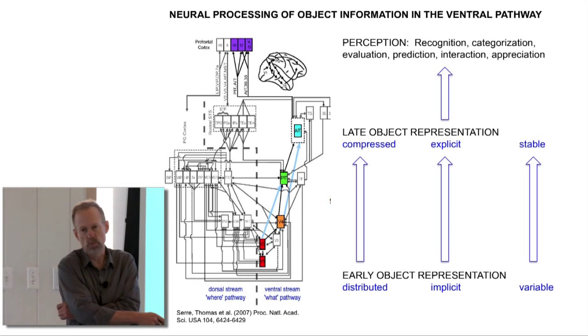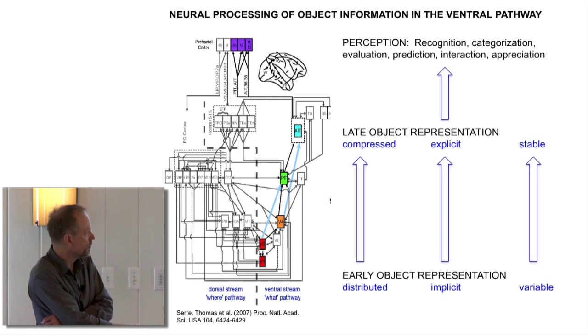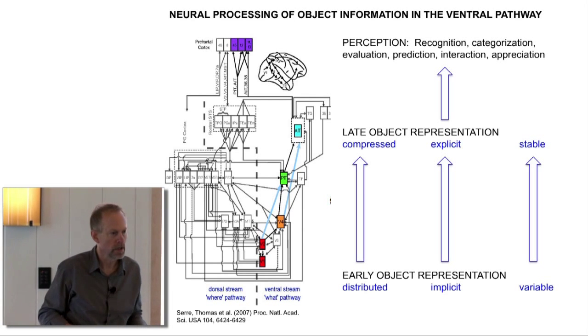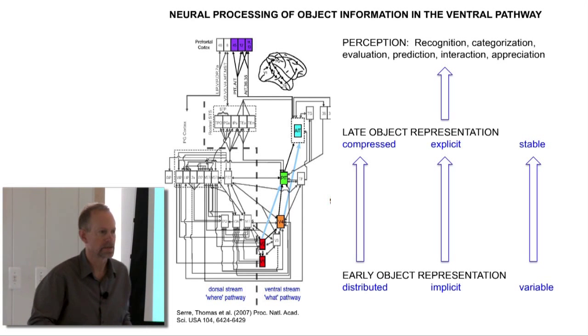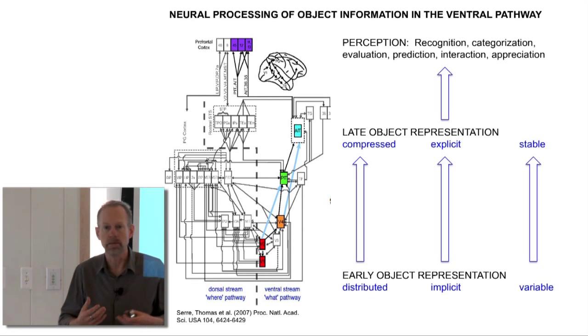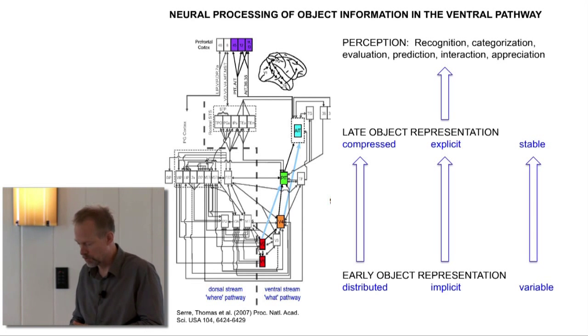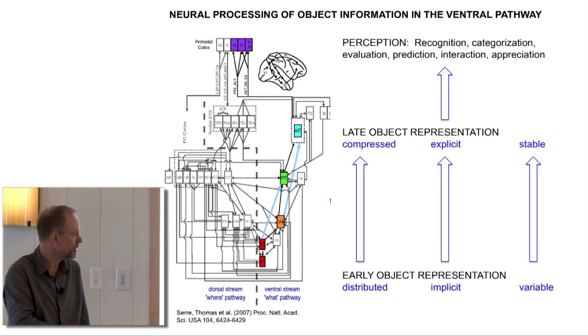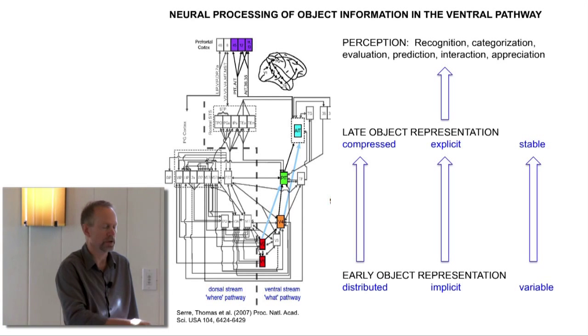These early representations are too distributed. The kind of information we need, for example object identity, is far too implicit. That means it would take too many operations to pull out something like my name out of the image hitting your eye right now. And finally, it's extremely variable.